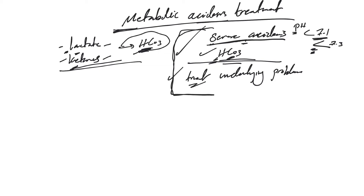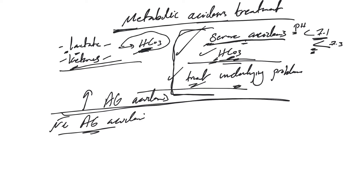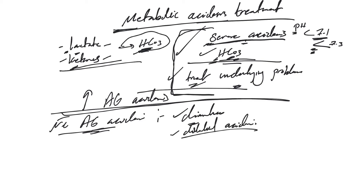This discussion about bicarb as a temporizing measure applies to increased anion gap metabolic acidosis — treating severe acidosis while fixing the underlying problem. For normal anion gap acidosis, there is a true bicarb deficit, so giving bicarb makes sense and will fix the problem. If you can treat the underlying problem — like stopping diarrhea or stopping the fluids in dilutional acidosis — then the bicarb will correct itself. But if the bicarb loss is severe and significant, you can add a bicarb drip.